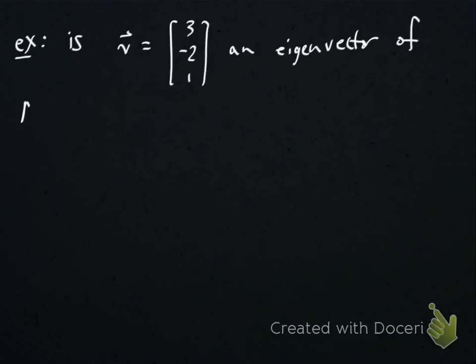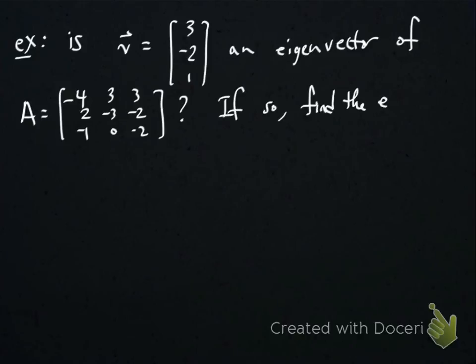What if we turn it around and ask the other way? Suppose I give you a vector [3; -2; 1] and ask you is this an eigenvector of the following matrix? And if so, find the corresponding eigenvalue.